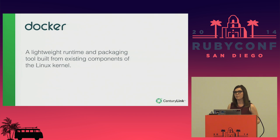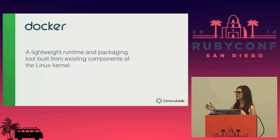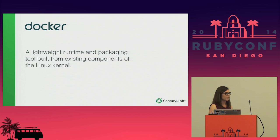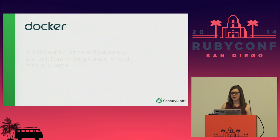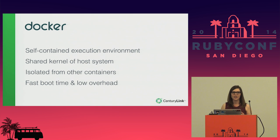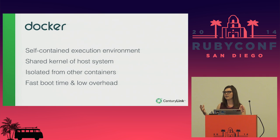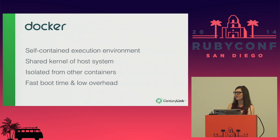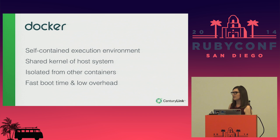Docker, at its core, is a packaging tool. It sits on top of existing components of the Linux kernel and packages these containers and puts them into isolated execution environments. That's really all that it is. Docker has a very limited scope — it does not schedule jobs for you. What it does do is package your stuff and put it in a container. A container is nothing more than a self-contained execution environment, isolated from everything else. It has the benefit of sharing the kernel of the host system while having isolation, giving it very fast boot time, low overhead, and efficient operation.